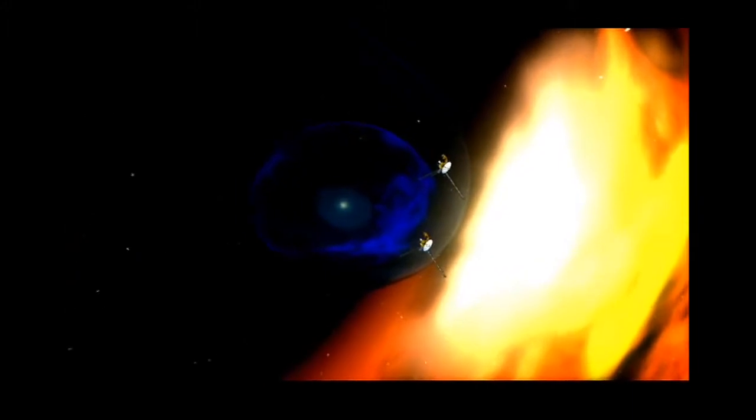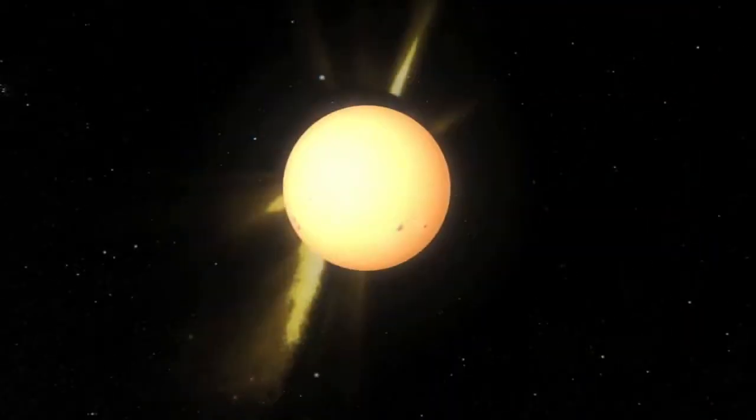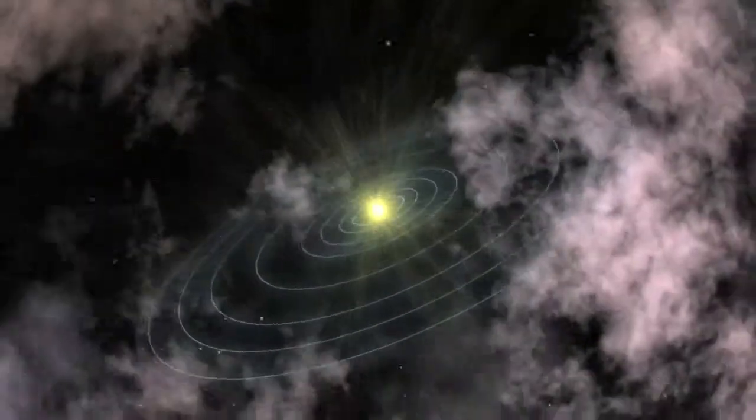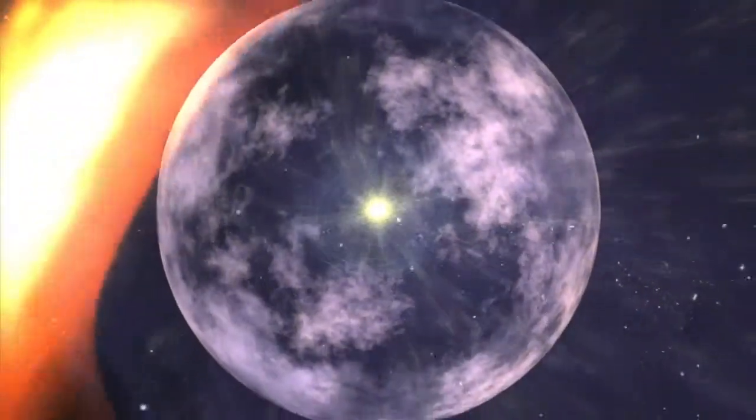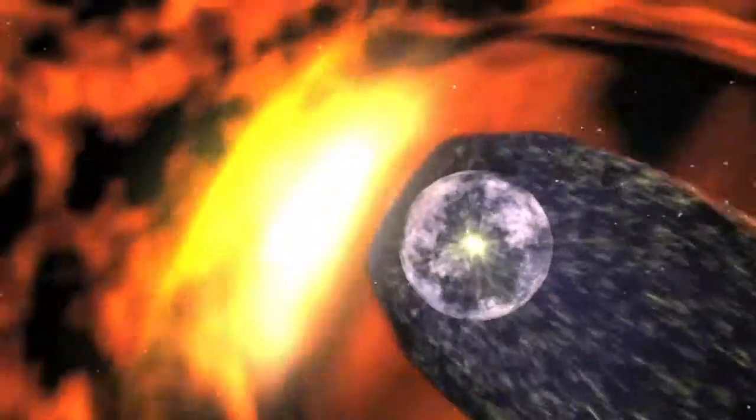However, when Voyager 2 crossed this boundary much closer to the Sun than expected, we received a picture of a squashed heliosphere rather than a round bubble. The squashed heliosphere helped scientists build up a picture of how the Sun interacts with the space outside of our solar system.